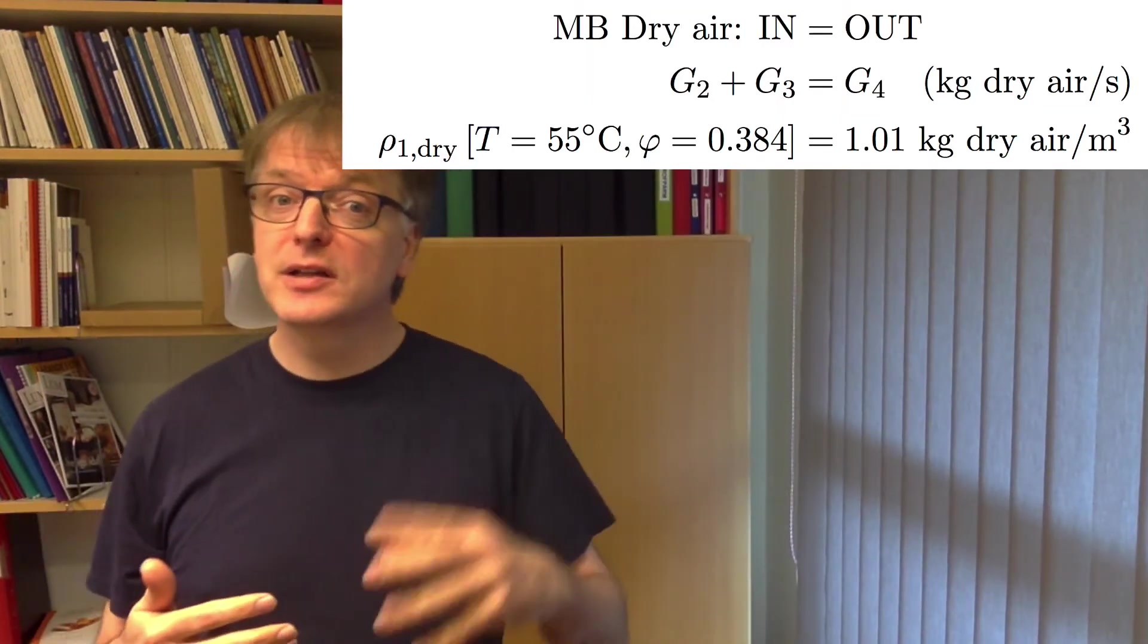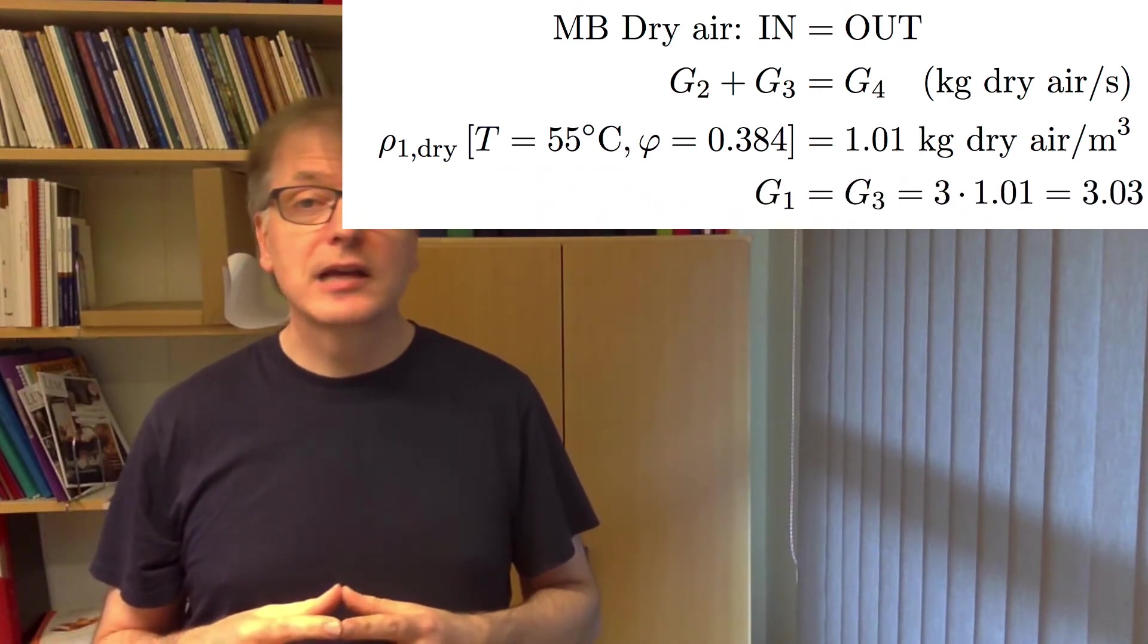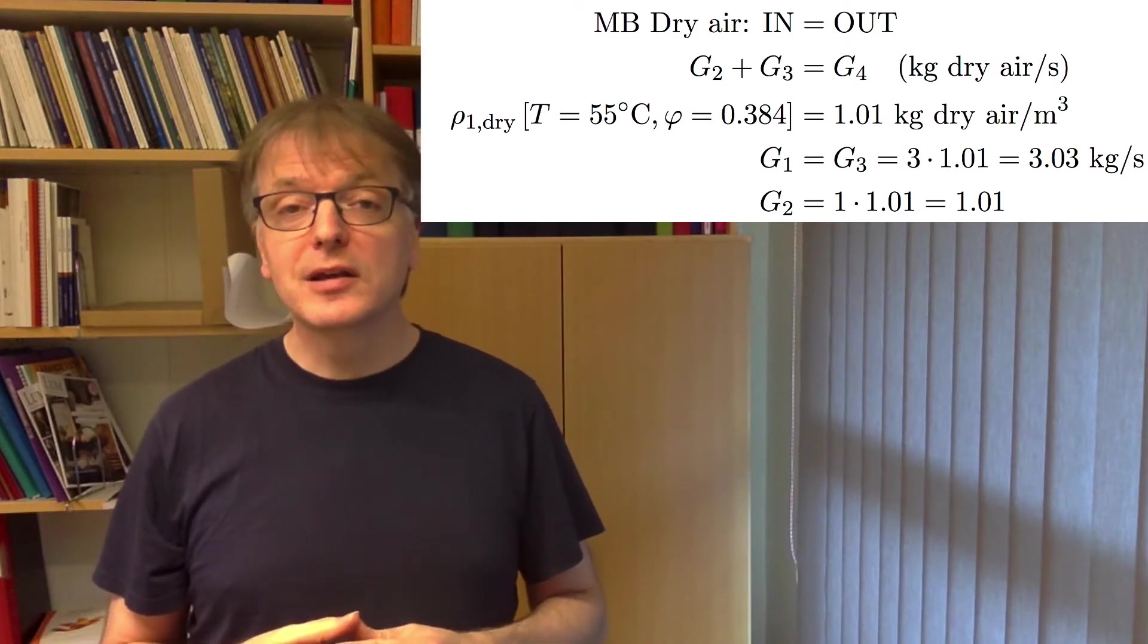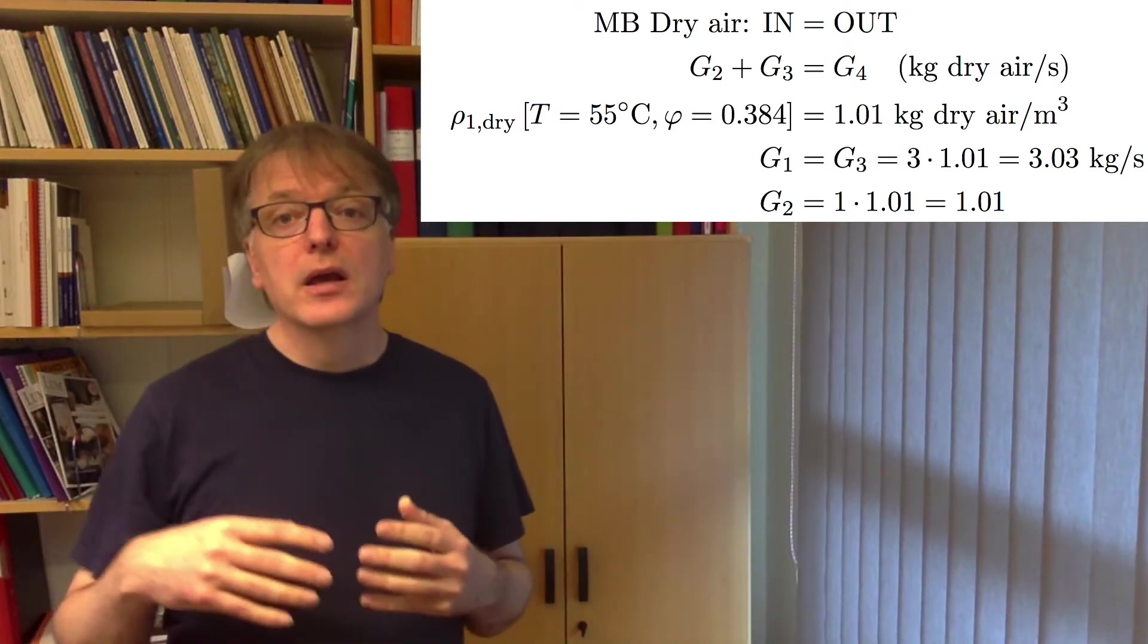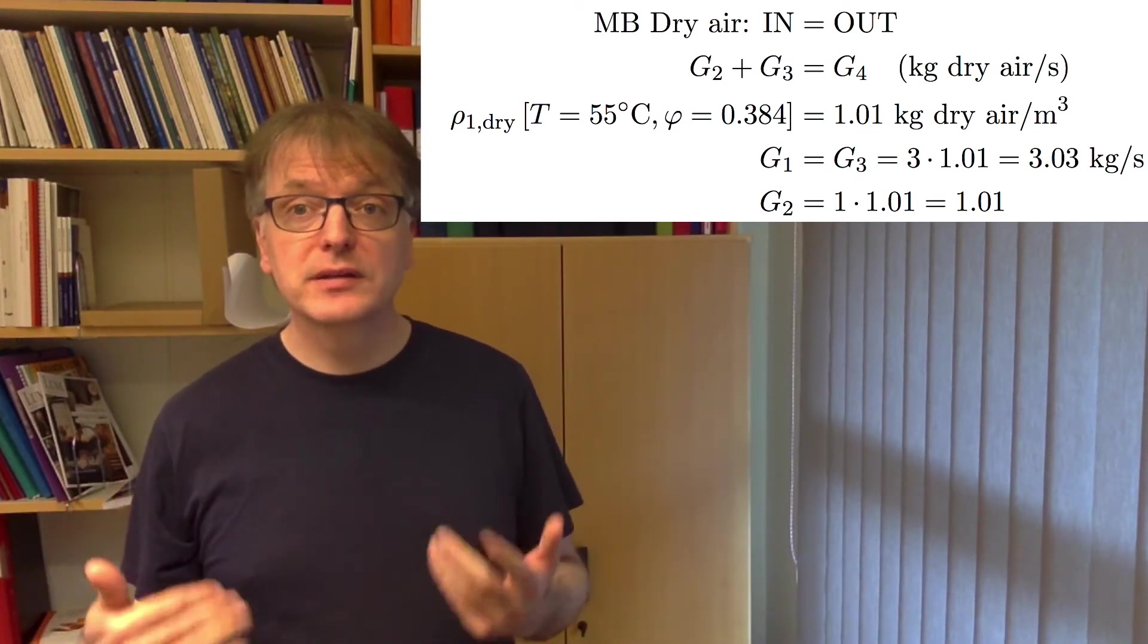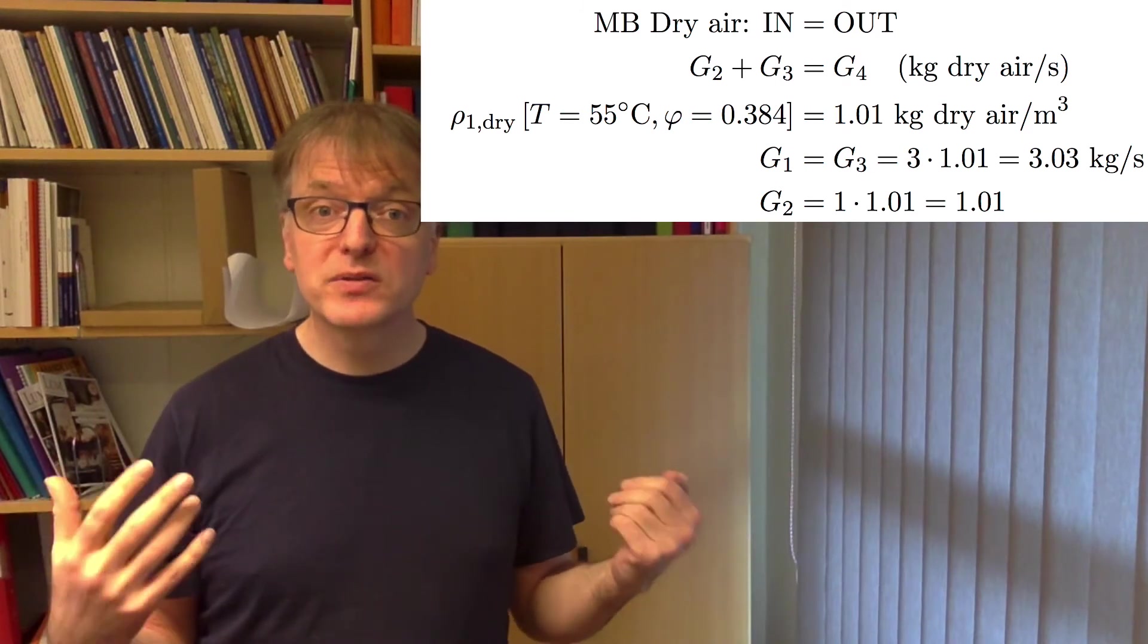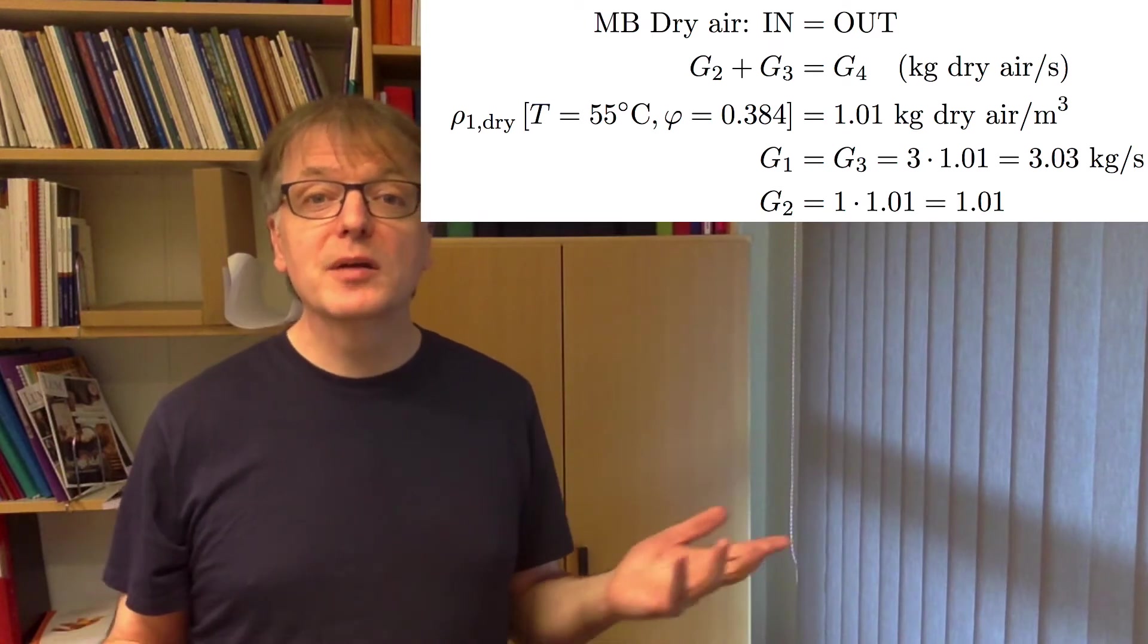And now we can translate our flows into kilograms per second. So g1 is 3 times the density, so 3 times 1.01, which makes 3.03 kilograms of dry air per second. And g2 is 1 times 1.01, so 1.01 kilograms per second. Okay, so now we can do a mass balance. G4 is g3 plus g2, but g3 is the same thing as g1, since the amount of air doesn't change if you cool it down. It's still the same number of kilograms per second.